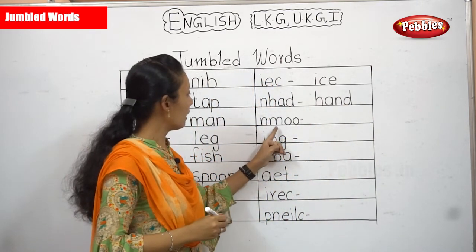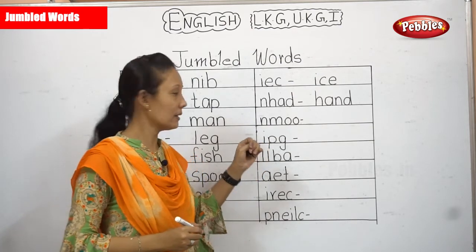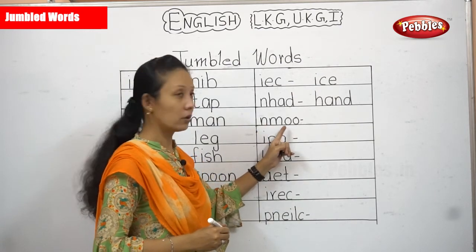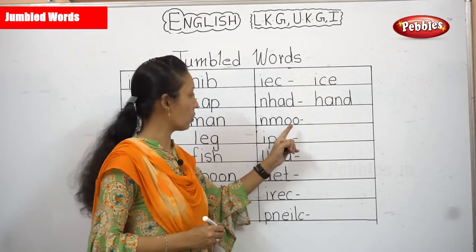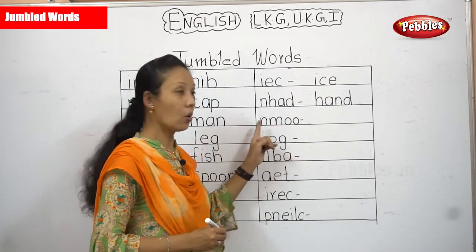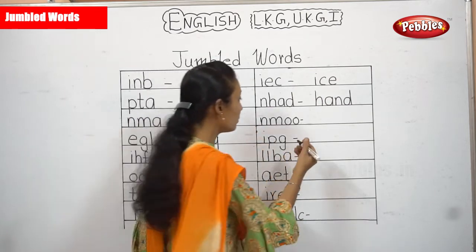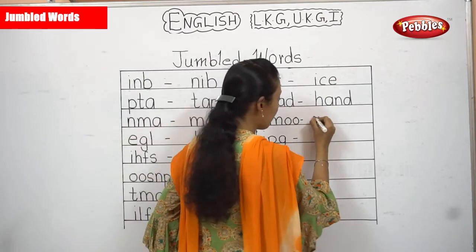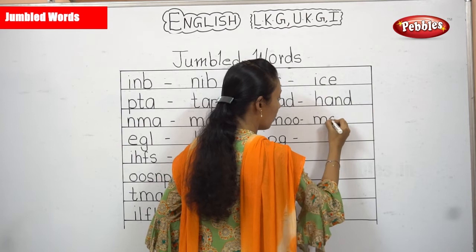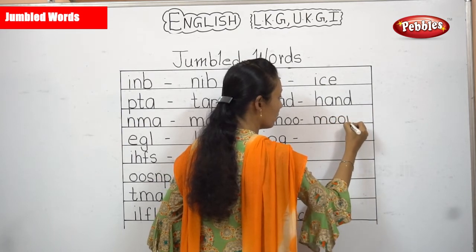Now N, M, O, O. There is no word like that, isn't it? What about MNOO? No. Next: M, O, O, N — is there a word? Yes, correct — MOON! M, O, O, N — moon. Very good, moon.